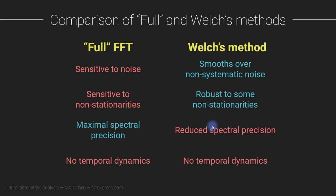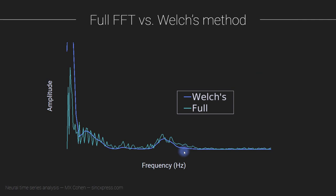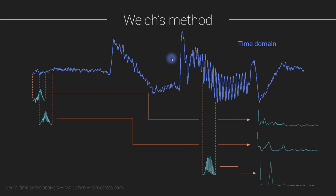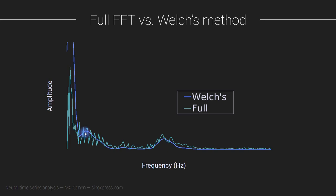Whether that lower resolution is a problem depends on the frequencies at which the dynamics in your signal are happening — something to keep in mind. A disadvantage of both methods is that they still do not allow us to visualize the temporal dynamics in the signal. You can probably already guess how to adapt Welch's method to preserve temporal dynamics: instead of averaging all the spectra together, you look at each spectrum separately and plot them along the time axis. Technically, that is not Welch's method — that's called a spectrogram, or the short-time Fourier transform, which I'll cover in the next section on time-frequency analyses. Formally, Welch's method still results in one smoothed spectrum.